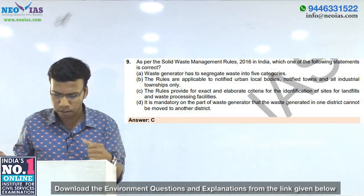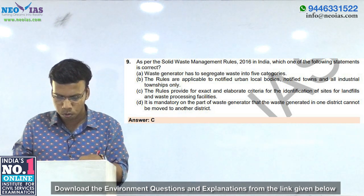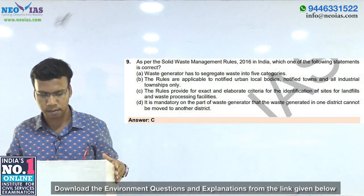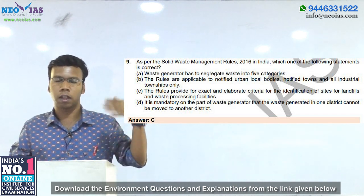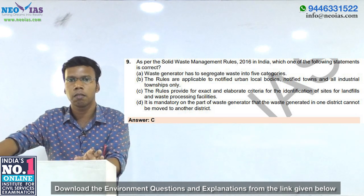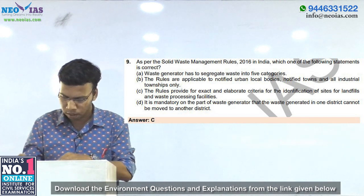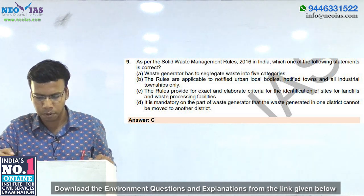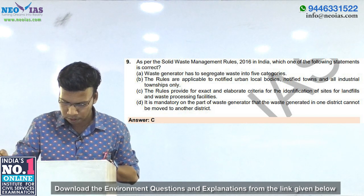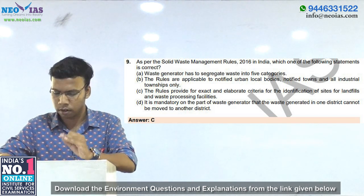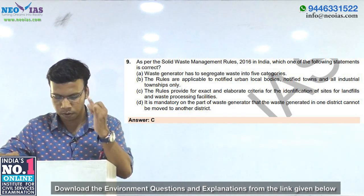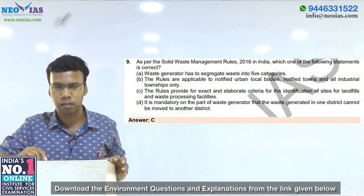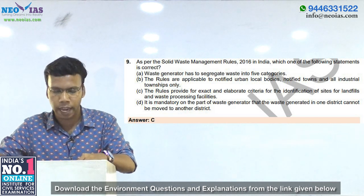The next question is regarding Solid Waste Management Rules 2016 — also a current affair. First statement: waste generator has to segregate waste into five categories. Actually, the Solid Waste Management Rules 2016 say that waste should be segregated into three streams: biodegradable, dry, and domestic hazardous waste. Dry waste consists of plastic, paper, metal, wood, etc. Domestic hazardous waste includes diapers, napkins, mosquito repellents, cleaning agents, etc. So there are three streams of waste, not five — the first statement is wrong.